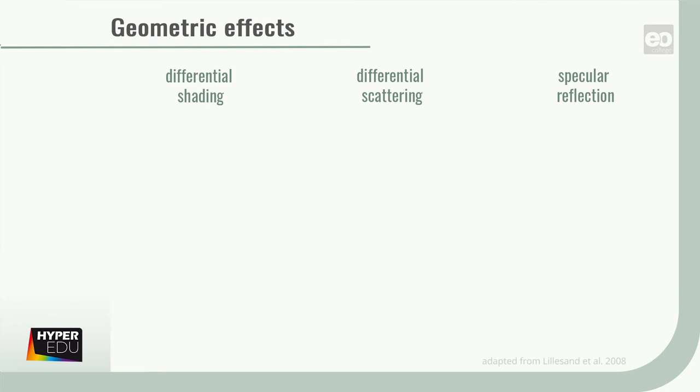Some typical geometric effects that can influence the reflectance in an image are, for example, differential shading, differential scattering, and specular reflection.